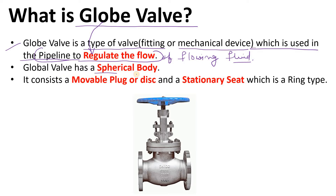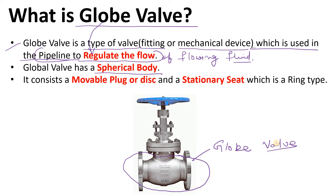The globe valve has a spherical body — you can see that in the globe valve there is a spherical body. Because of that spherical body, it is known as the globe valve. The name suggests its shape. It consists of a movable plug or disc and a stationary seat which is ring-type. We will discuss the disc and seat in upcoming slides as internal parts.